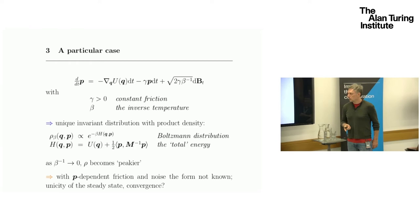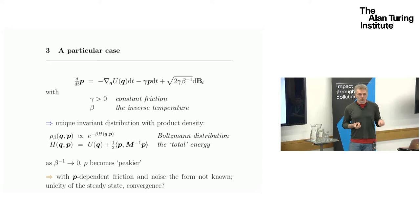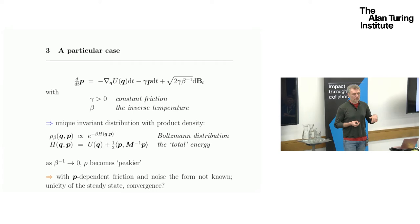As the temperature goes to zero, expectedly, the distribution becomes a lot more concentrated. One of the things we lose when we go to position-dependent terms is that we don't really have an explicit form for the invariant measure. That makes things a bit more complicated.